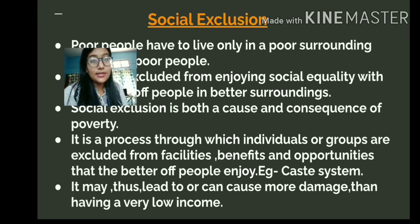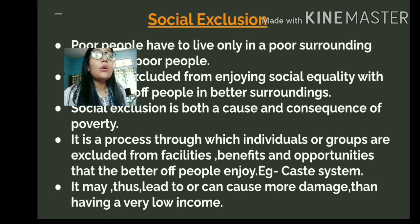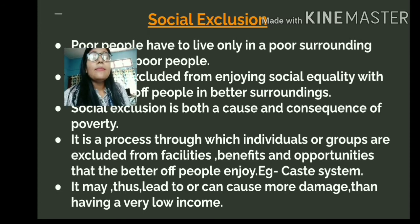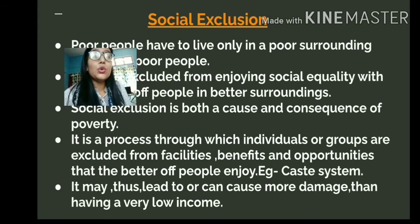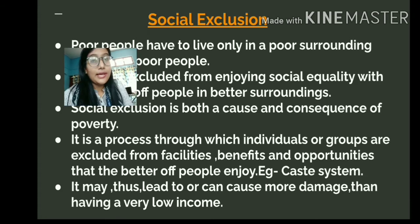Social exclusion can be defined as a process through which individuals or groups of individuals are excluded from the various facilities, benefits, and opportunities that the better-off people enjoy. One example of social exclusion is the caste system. In India, there is a long history of discrimination against lower-caste people. Because of the caste system, lower-caste people are never fully accepted by mainstream society — they are considered impure or different.